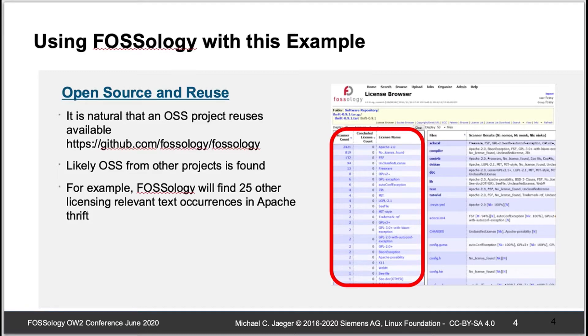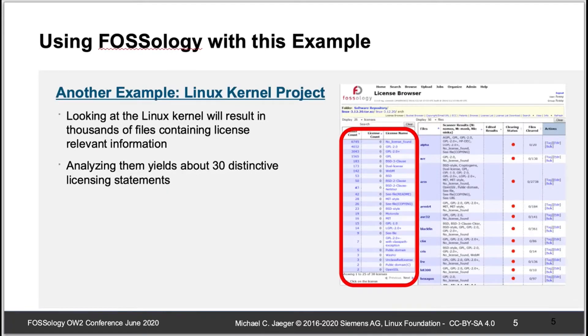If you look at the very famous open source project, the Linux kernel project, you will find — depending on how you count it — up to 30 distinctive licensing statements.